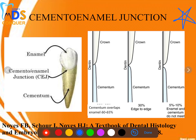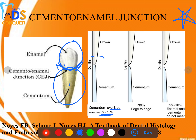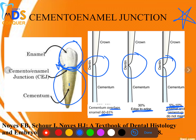The cemento-enamel junction is the junction between the coronal enamel and the root cementum. This junction can be overlapping, as seen in 60 to 65 percent of cases. It can also be edge-to-edge making a butt joint.